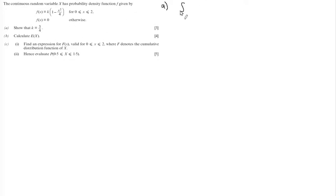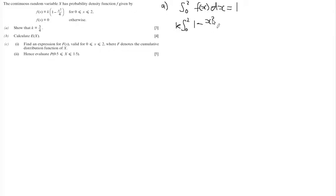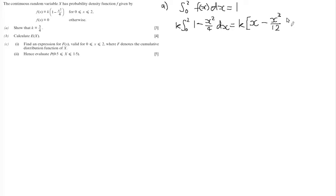In order to show that k equals three quarters, we need to show that integrating f(x) between 0 and 2 equals 1. I'm going to take k outside the integral and integrate (1 minus x squared over 4) with respect to x. The constant 1 integrates to x, and x squared over 4 integrates to x cubed over 12, evaluated between 0 and 2.